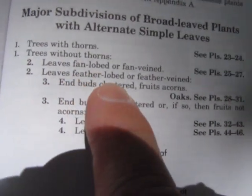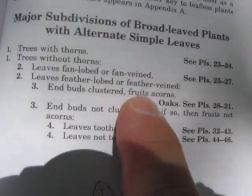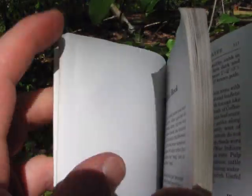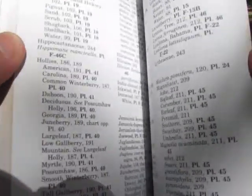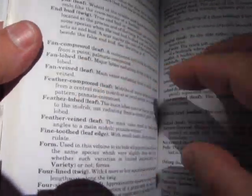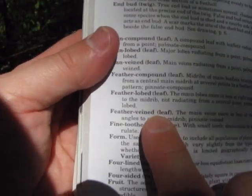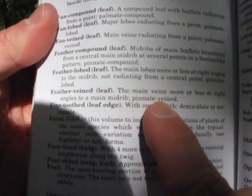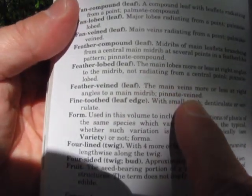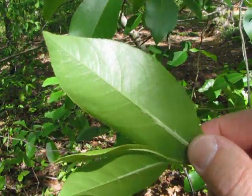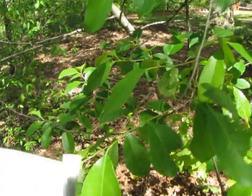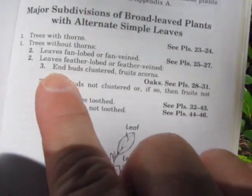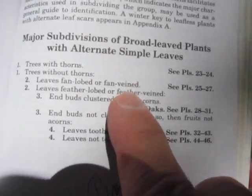Number two: leaves fan-lobed or fan-veined, or leaves feather-lobed or feather-veined. If you don't know what this is, you can look at the front of the book where it gives descriptions under leaf shapes — here's fan-lobed, fan-veined, or feather-lobed — or go to the glossary. What we're looking at is a feather-veined leaf: the main veins more or less at right angles to the main midrib, pinnate-veined. You can see the venation coming out at more or less right angles from the midrib, which runs along the center of the leaf. So we have feather-veined leaves.